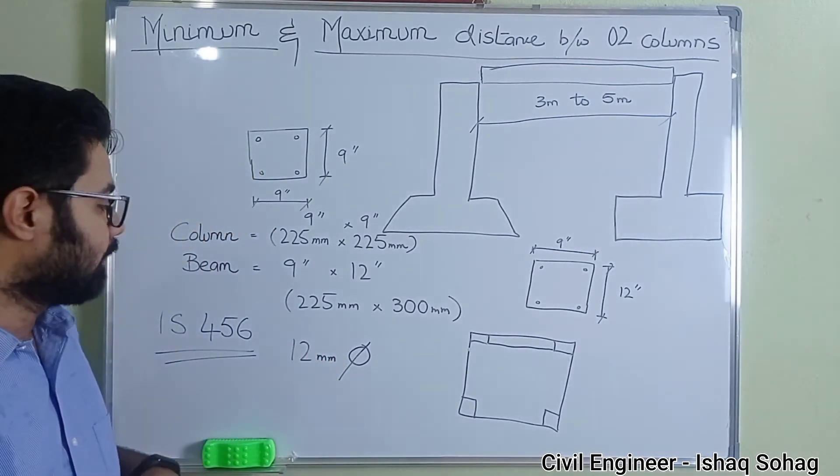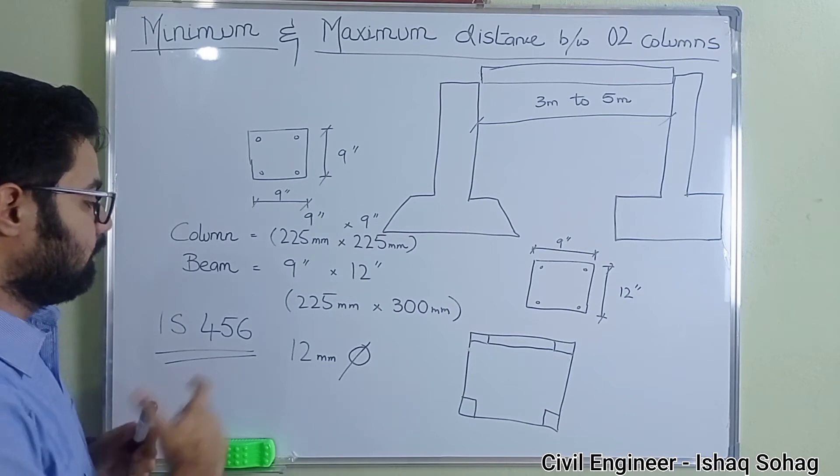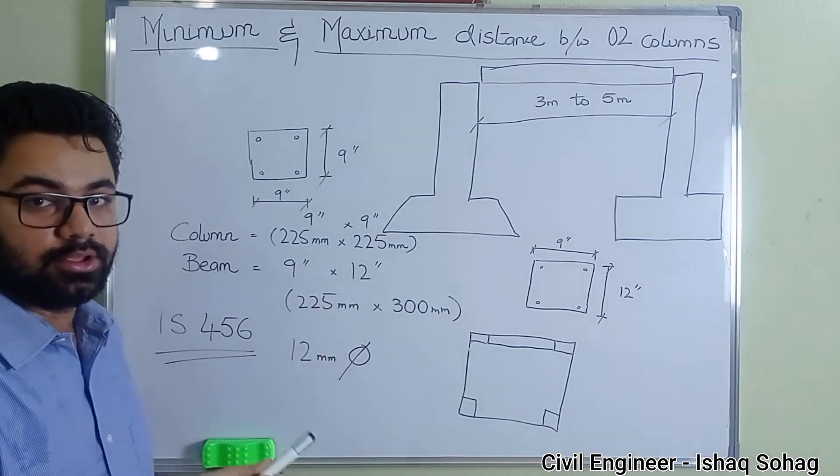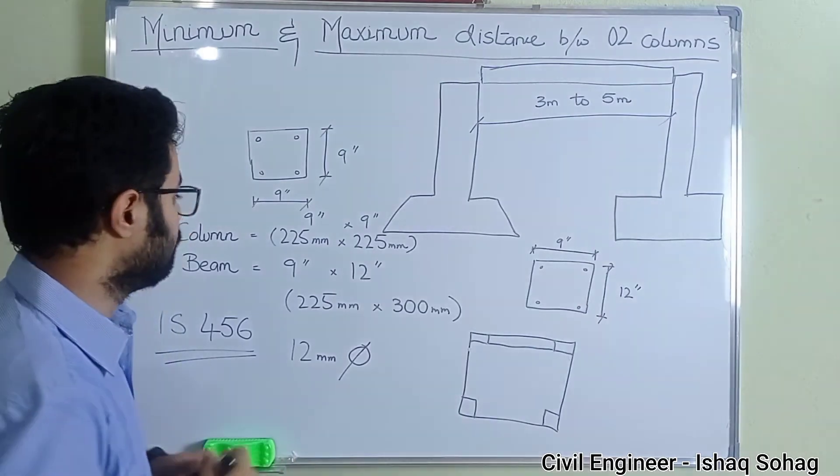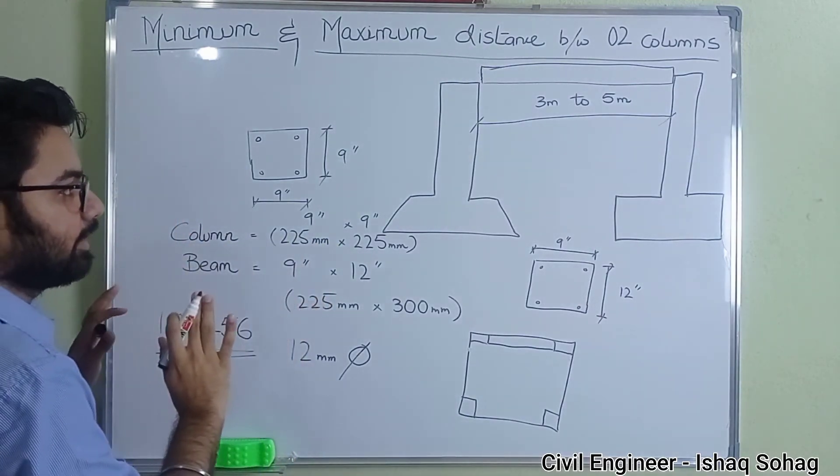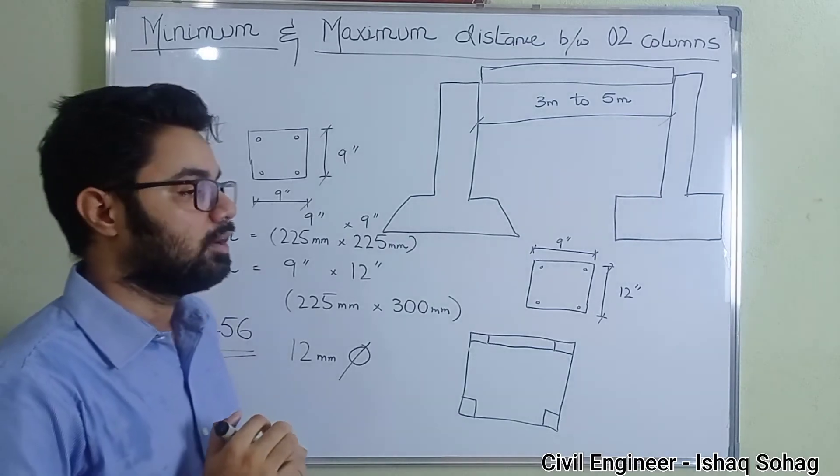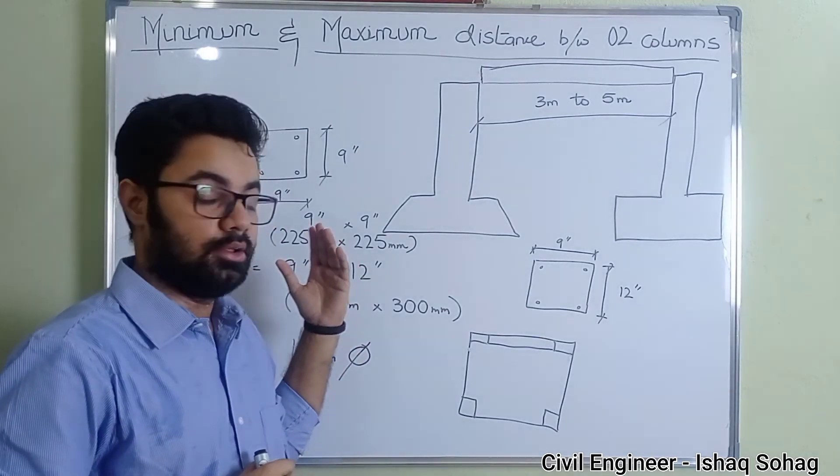Secondly, I would like to tell you that stirrups have to be at least 8 millimeter. So column, beam, you have got this designing.